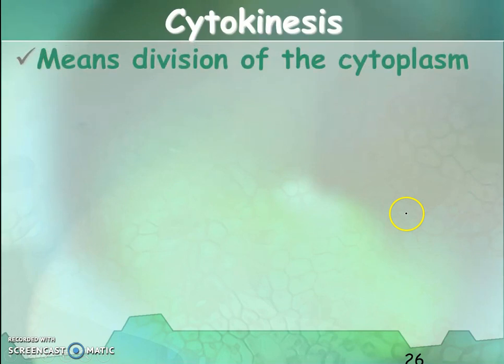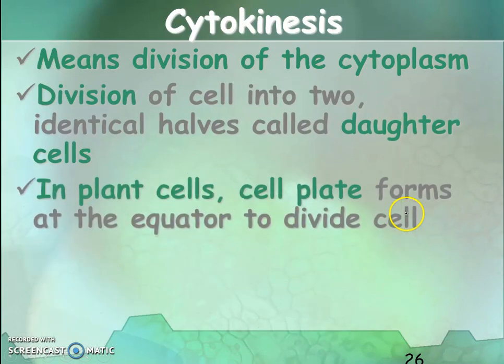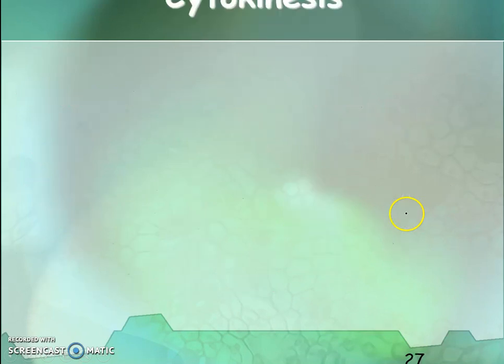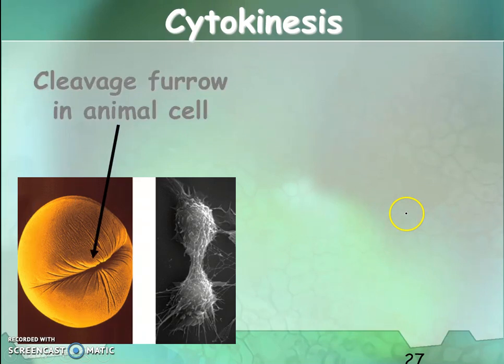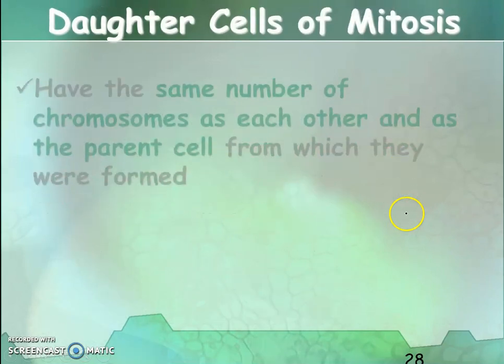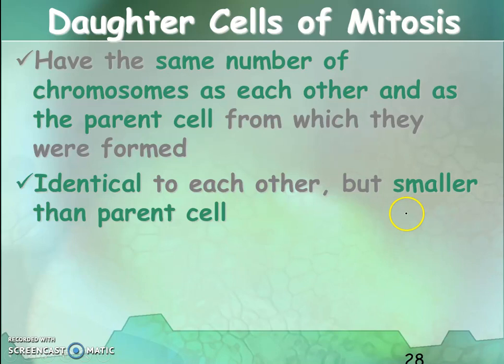Cytokinesis means division of the cytoplasm. The cell divides into two identical halves called daughter cells. In plant cells, a cell plate forms at the equator to divide the cell. In animal cells, a cleavage furrow appears. At the end, the cell divides into two daughter cells, each having the same number of chromosomes as the parent cell. The daughter cells are identical to each other but smaller than the parent cell.